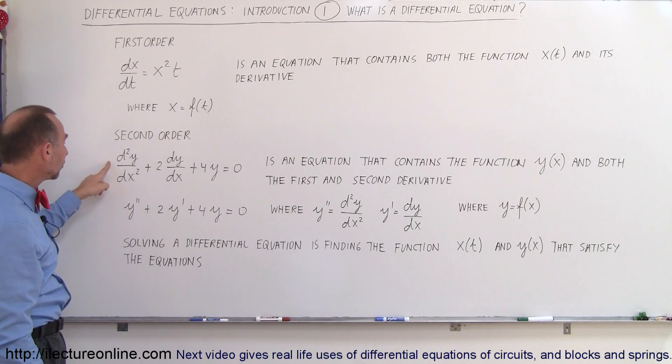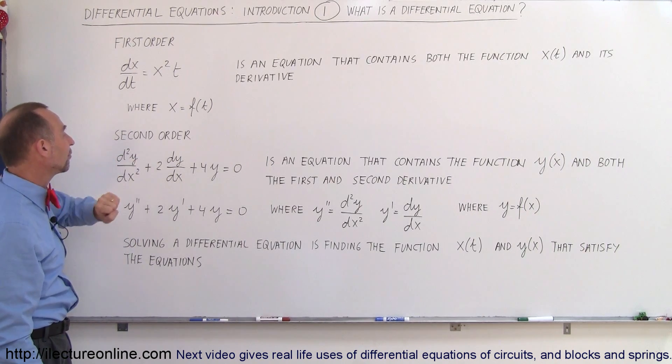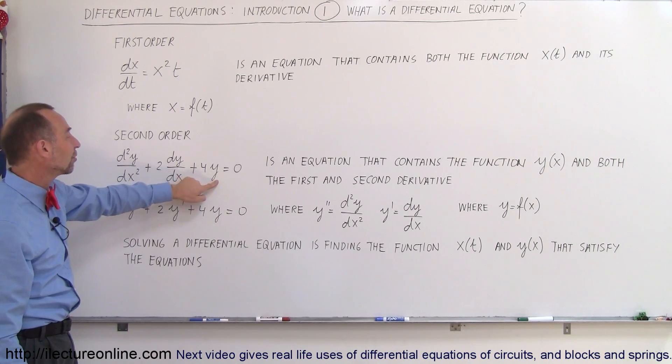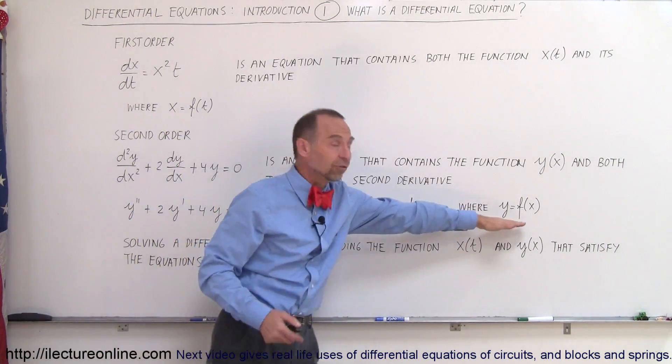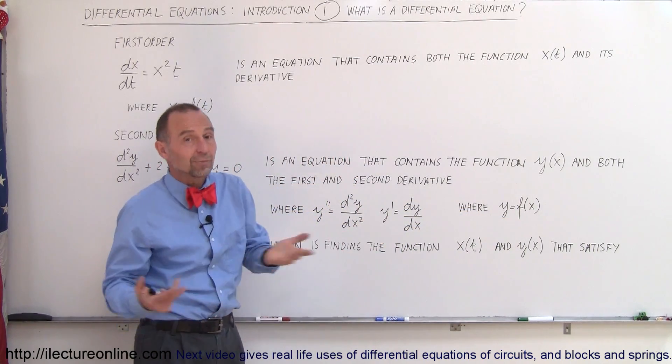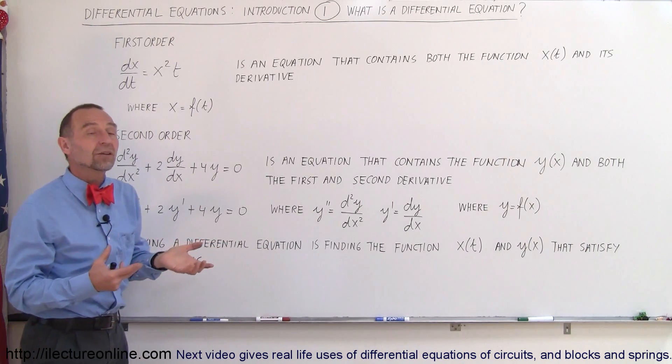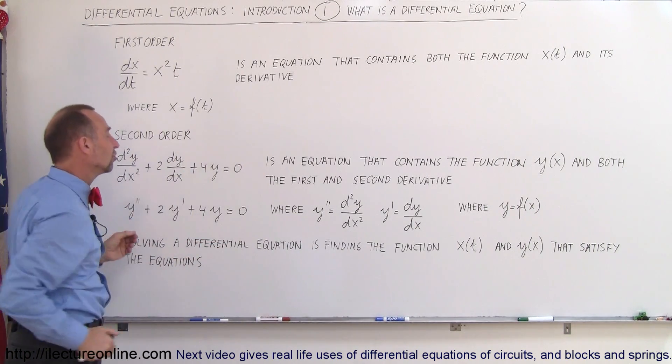So here we have the second derivative of the function y plus two times the first derivative of the function y plus four times the function y equals zero. Remember y is indeed a function of some other variable in this case x, and it could be like x squared plus 3x minus 5, so you don't know what it is and you're trying to find out what the function is so that this equation is satisfied.